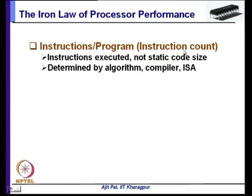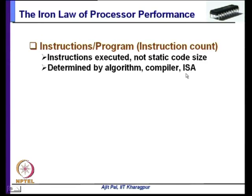Instruction count depends on three important parameters. First, the algorithm you are implementing — a better algorithm can reduce the code size. Second, the compiler — it can perform optimizations to reduce the dynamic size of code. Third, the instruction set architecture: the instructions that can be executed by the processor. So instruction count is dependent on several factors.